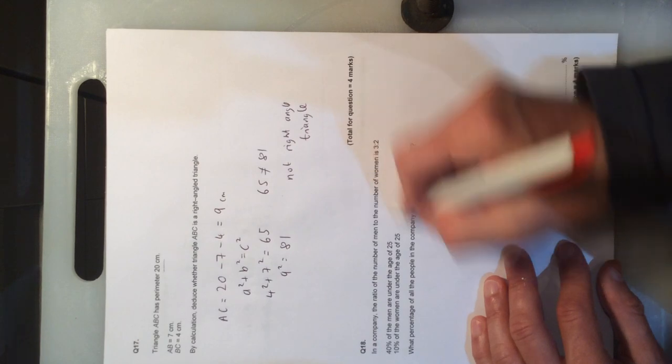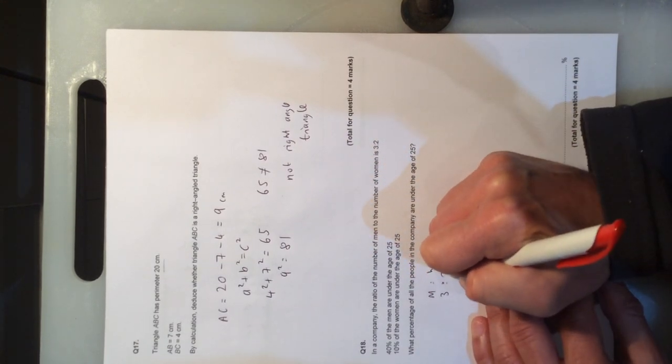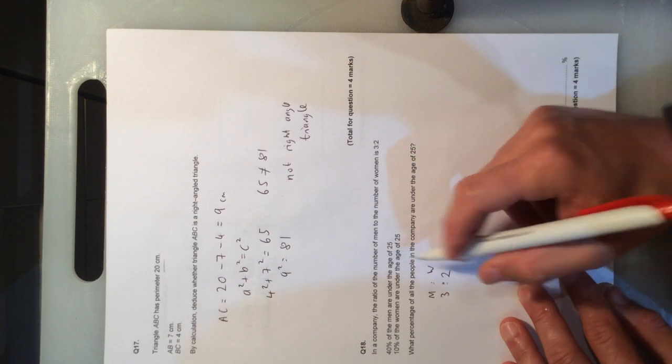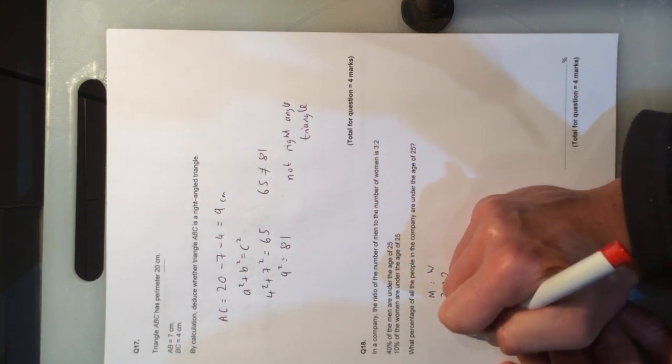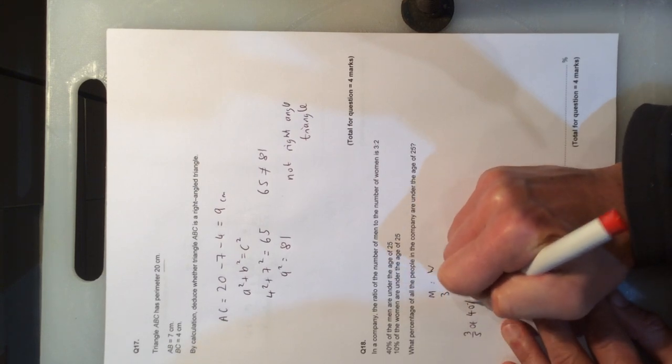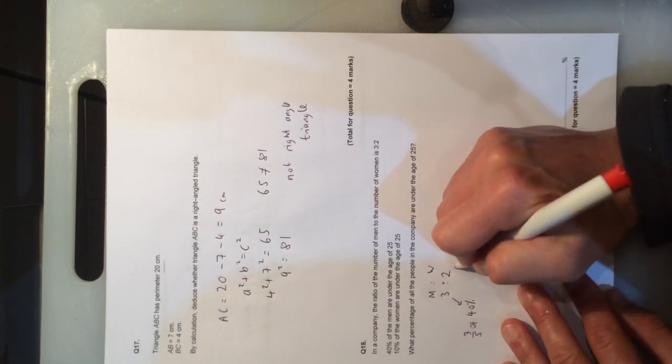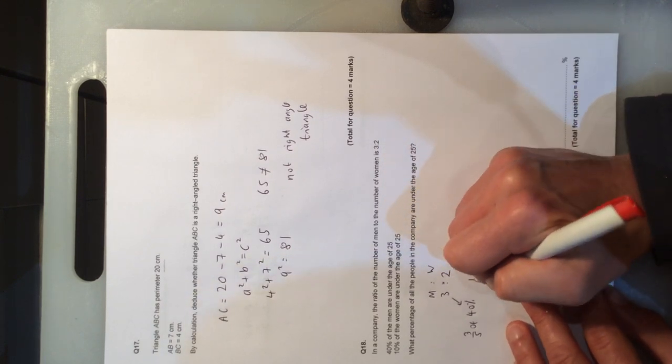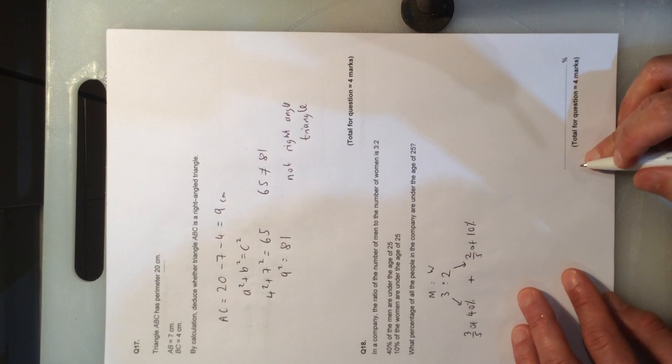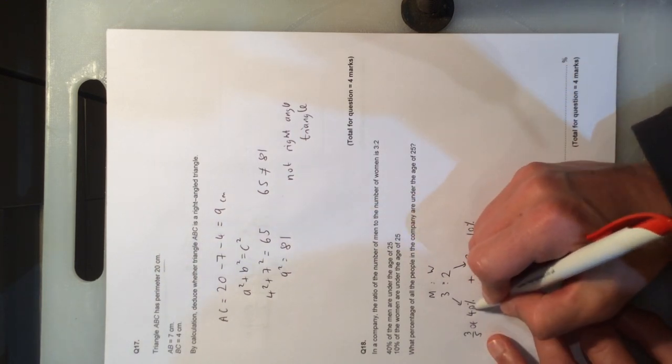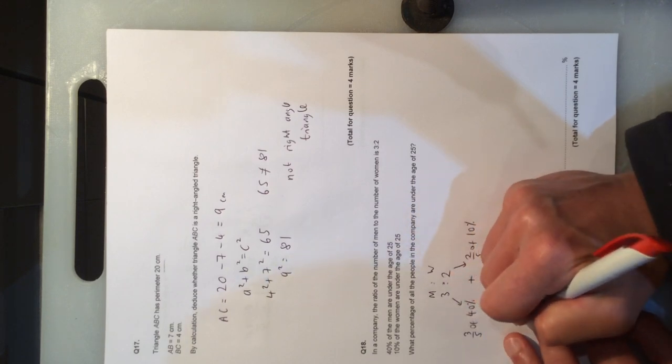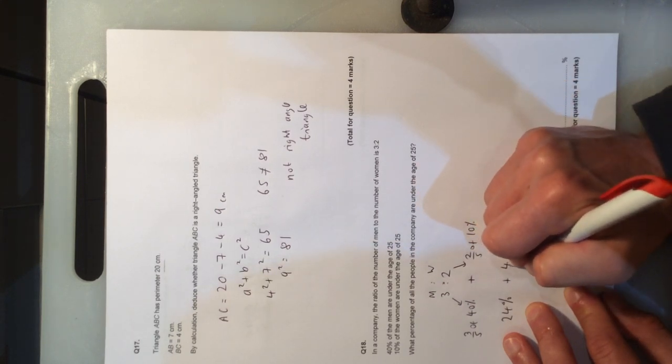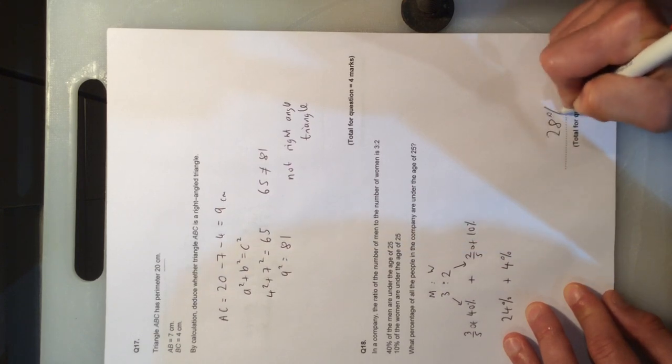Question 18. We've got the ratio in this company of men to women as 3 to 2. 40% of the men are under the age of 25. So you've got 3 fifths of the 40%. The total of the ratio is 5, so 3 fifths under 25 of the men. And you've got here 2 fifths of 10%. Divide by 5, which is 8, times by 3, which is 24, so that's 24%. Divide by 5, 10 divided by 5 is 2. 2 times 2 is 4%. Add them together, and you get 28%.